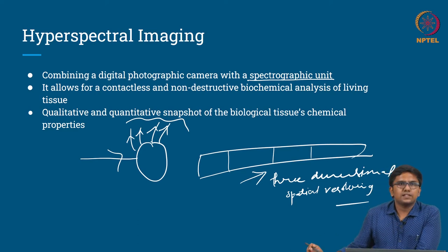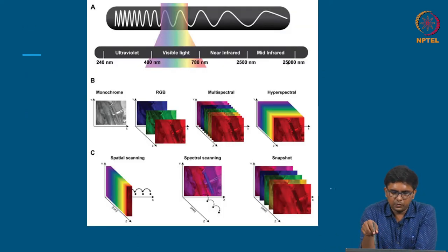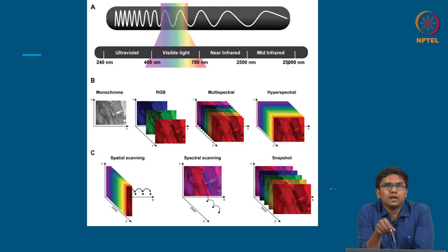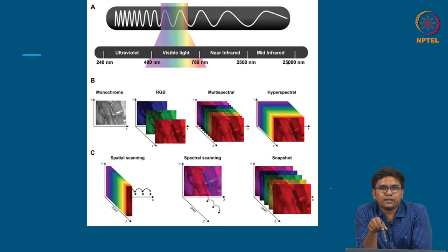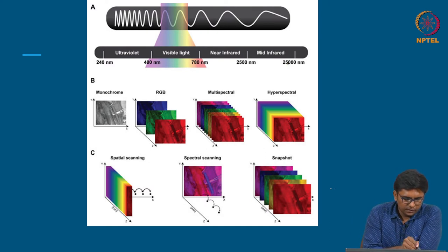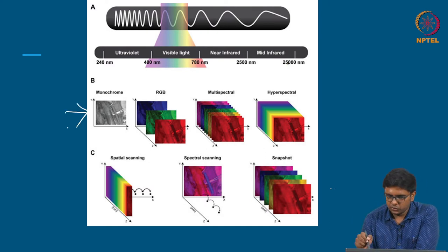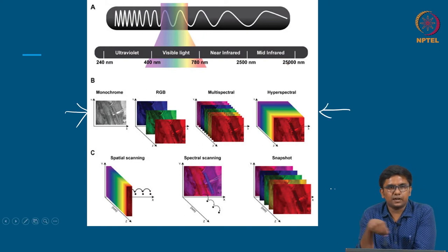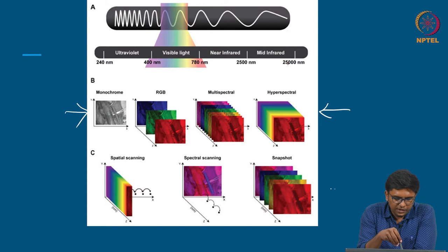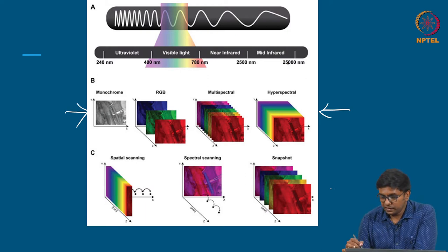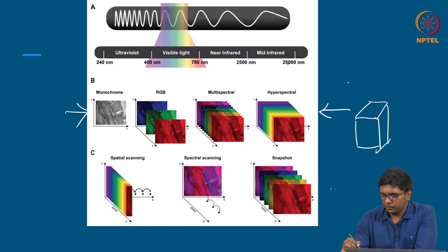This shows the total electromagnetic spectrum: UV, visible light, infrared and mid-infrared spectrum. The dataset shown here is derived using different image capturing technologies — monochrome, trichrome, RGB, multispectral, and hyperspectral. The data set obtained from hyperspectral imaging is what is called a hypercube.